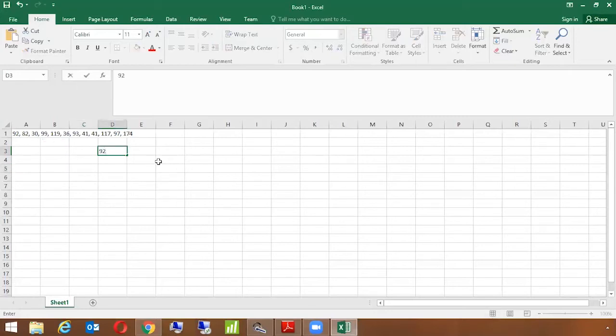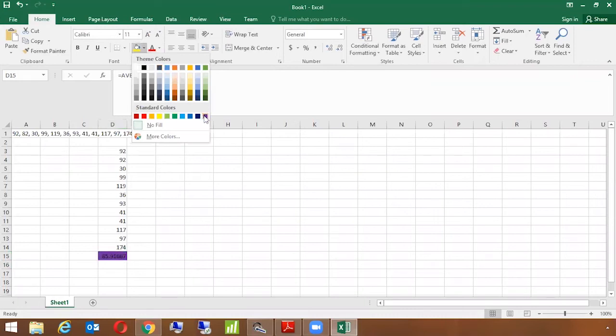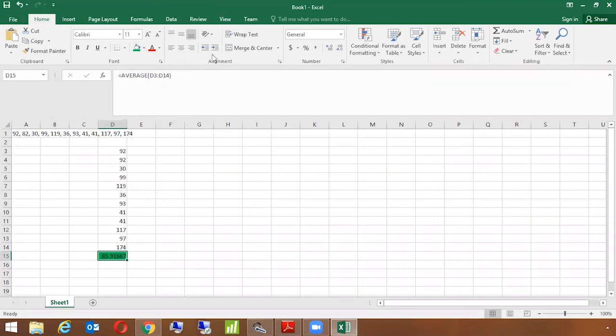I have the values here, so I'll sort it in a way that I can understand it. The values are 92, 82, 99, 119, 36, 93, 41, 41, 117, 97, and 174. We want to calculate the mean for this given data. It's very simple. We use an Excel formula which is AVERAGE. We select the entire data range, close the bracket, and hit enter. We get the value 85.91, so this is the mean for this given data.